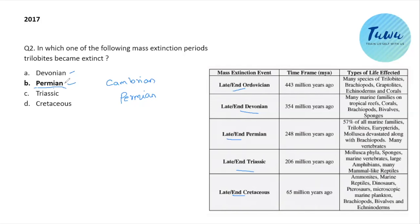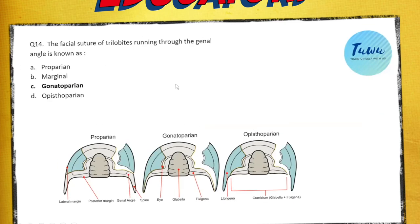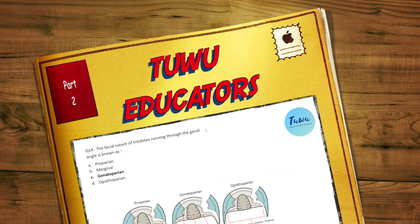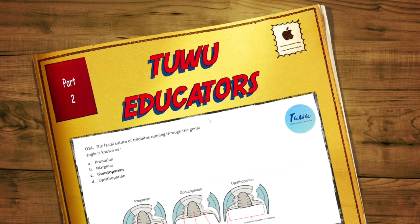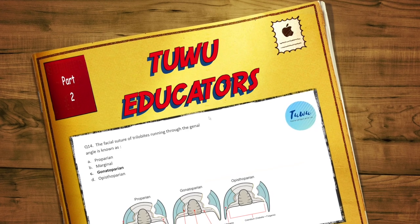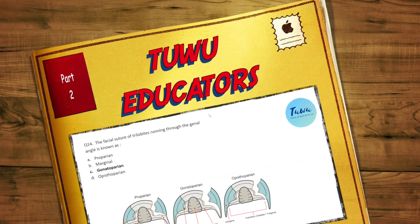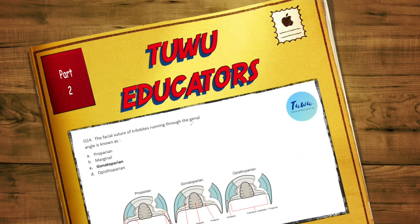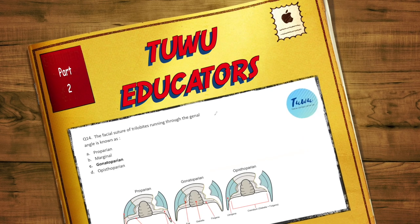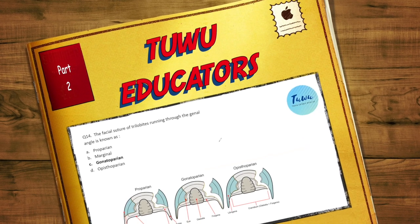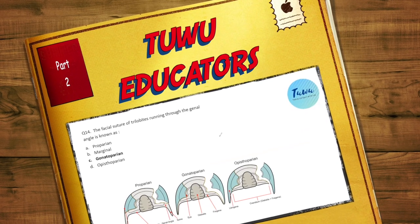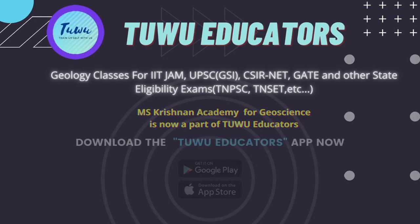The next question is related to trilobites — specifically their morphology. The next question asks about the facial suture of the trilobites.